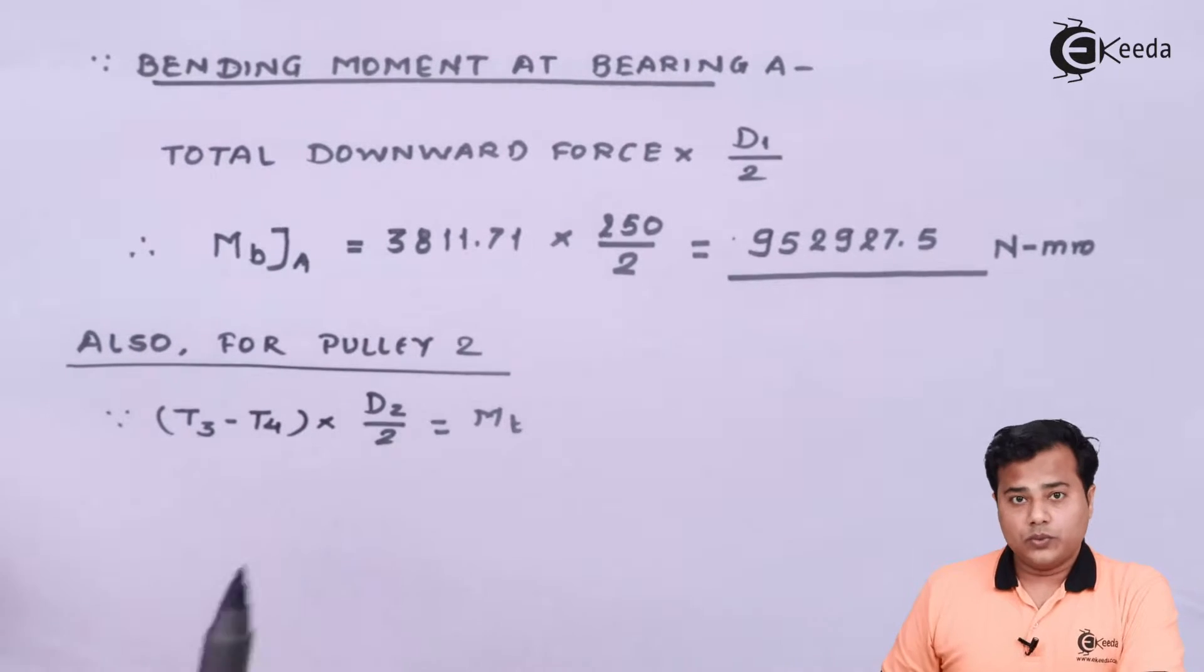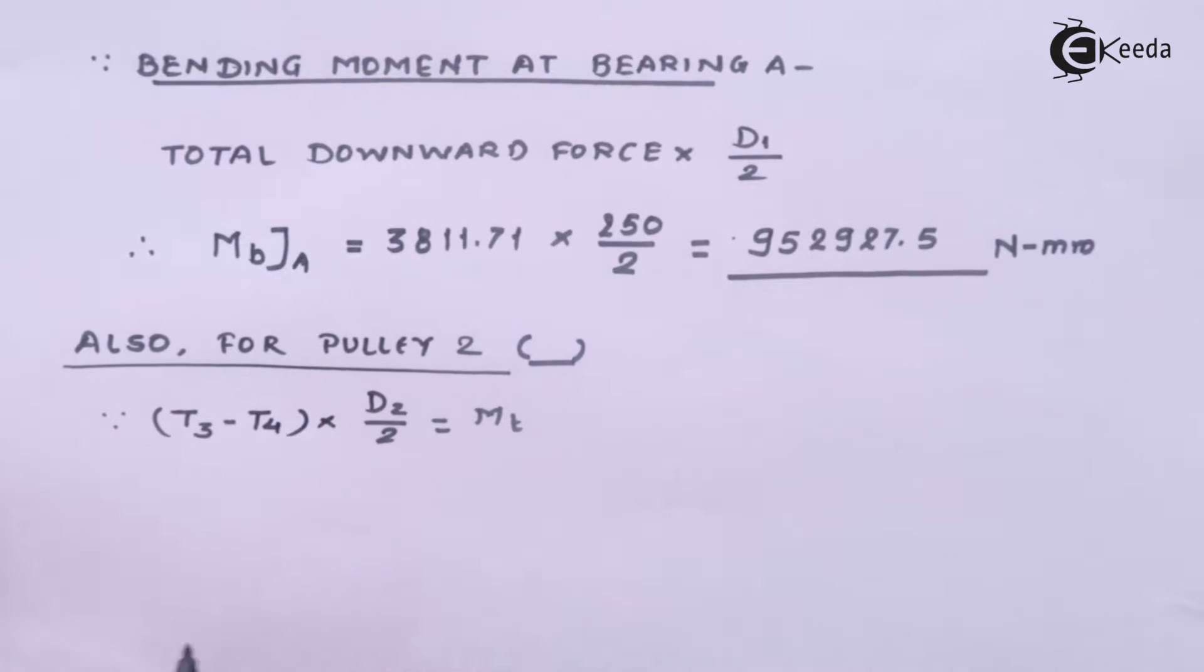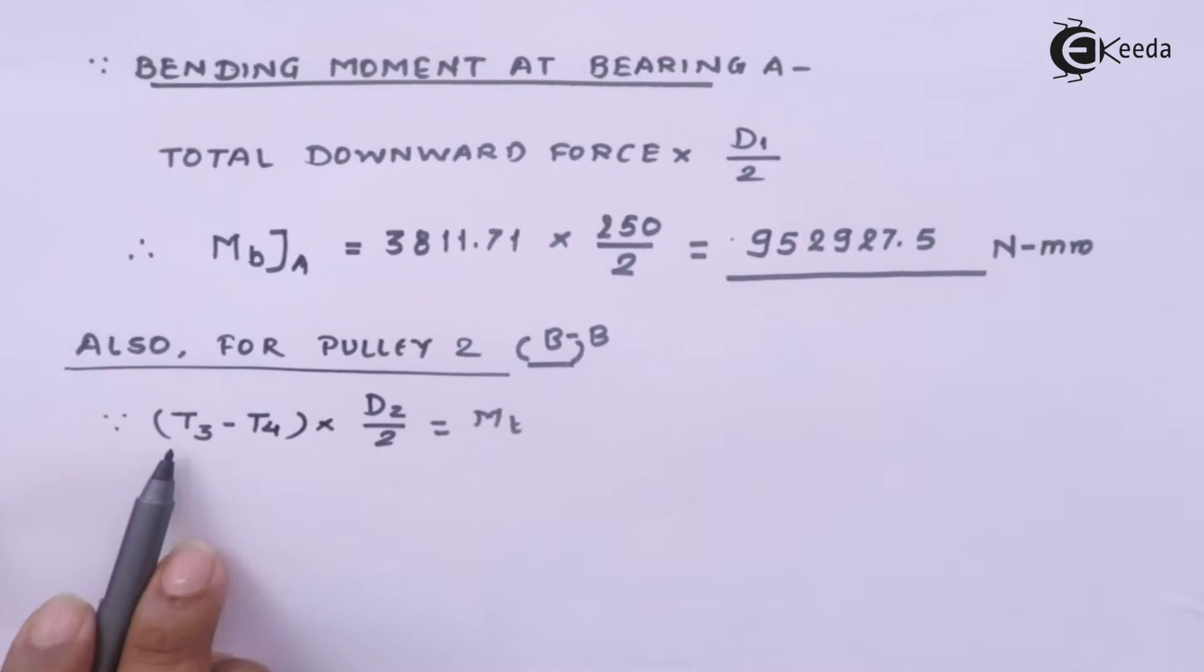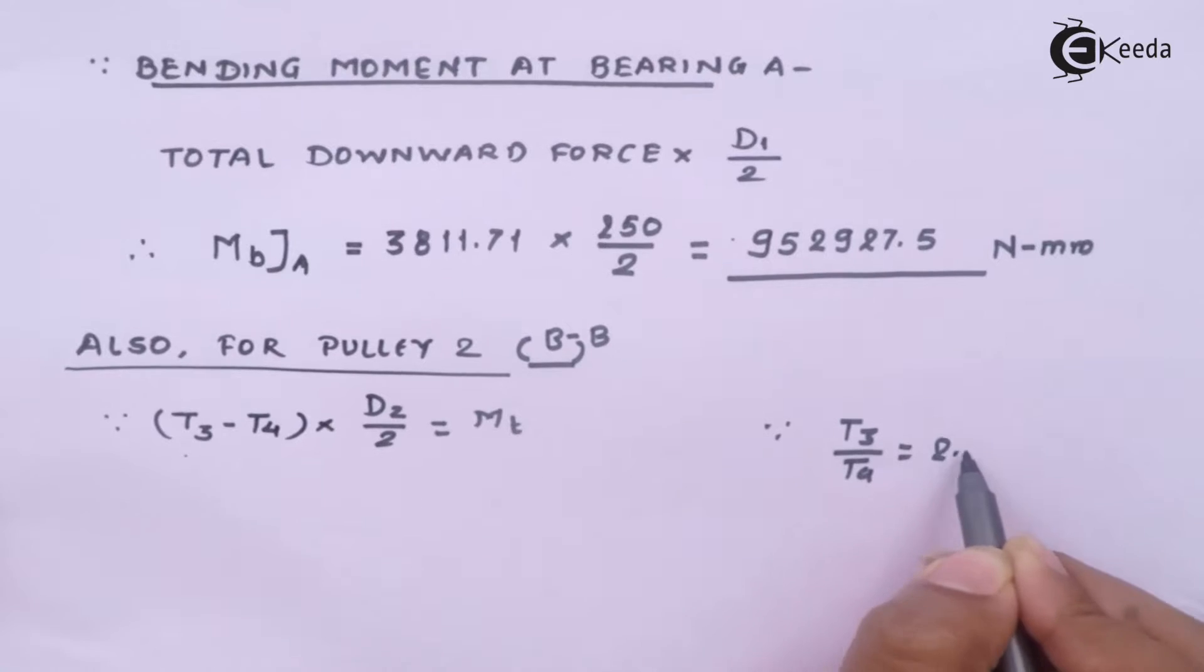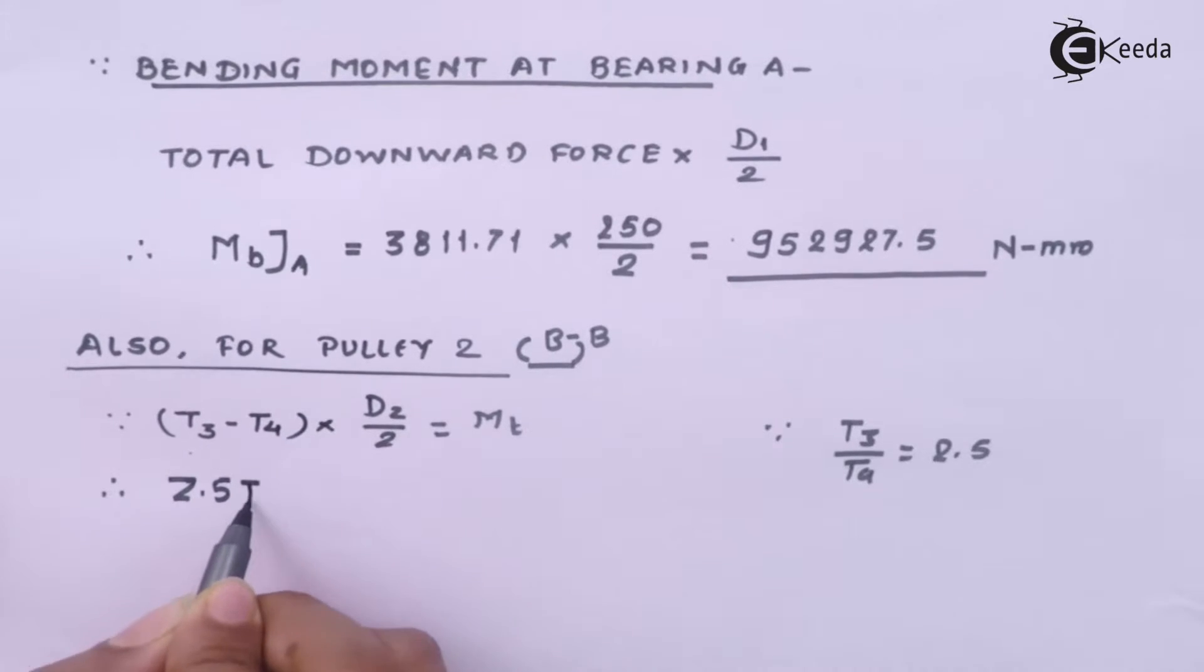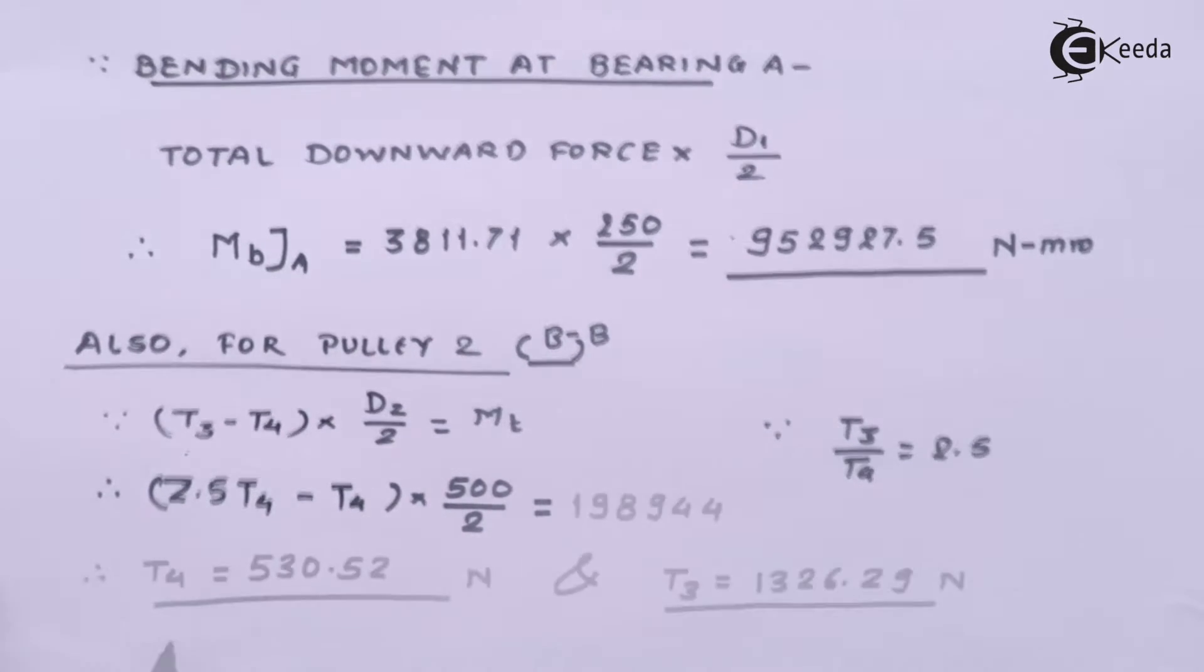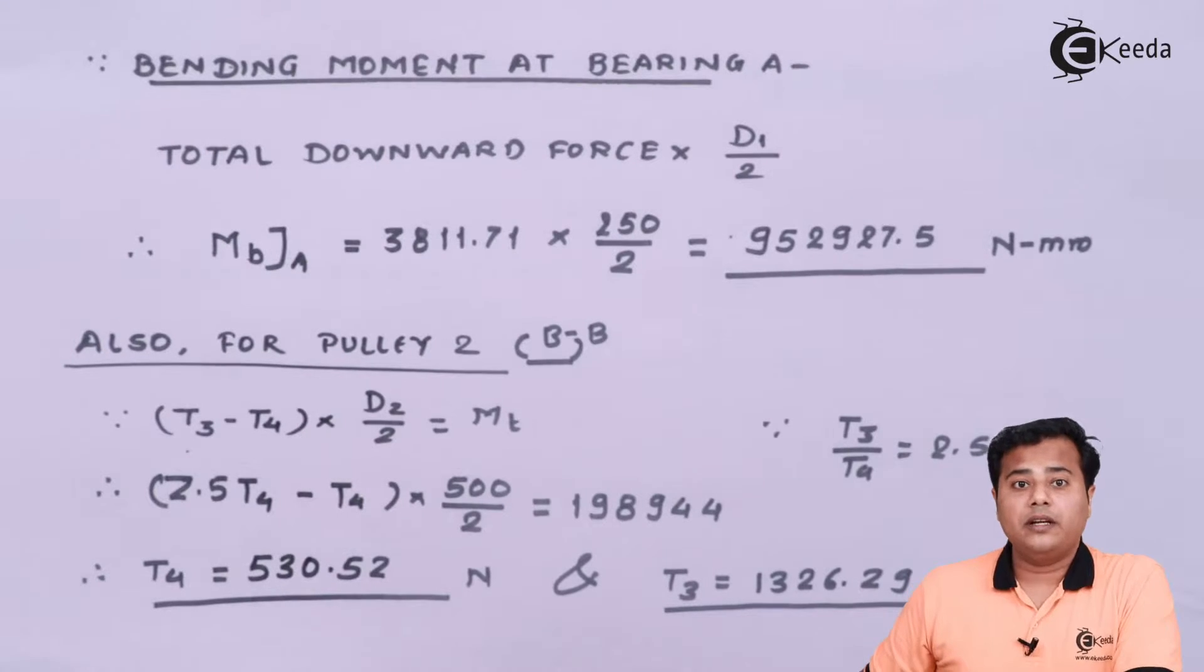For pulley number 2 with respect to bearing B, the same formula applies. We know that T3 divided by T4 equals 2.5. Substituting the values: (2.5×T4 - T4) times D2/2. Now this time the second diameter comes into picture, which is 500 divided by 2, equal to the initial torque. These are the tensions in the belt mounted on pulley number 2.